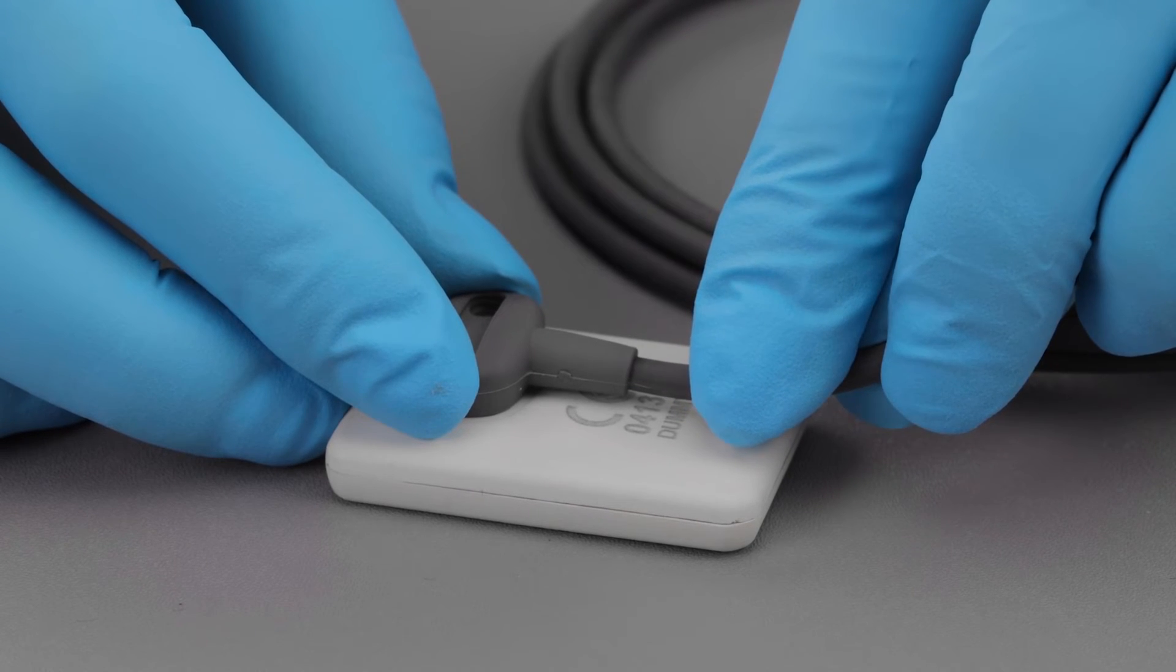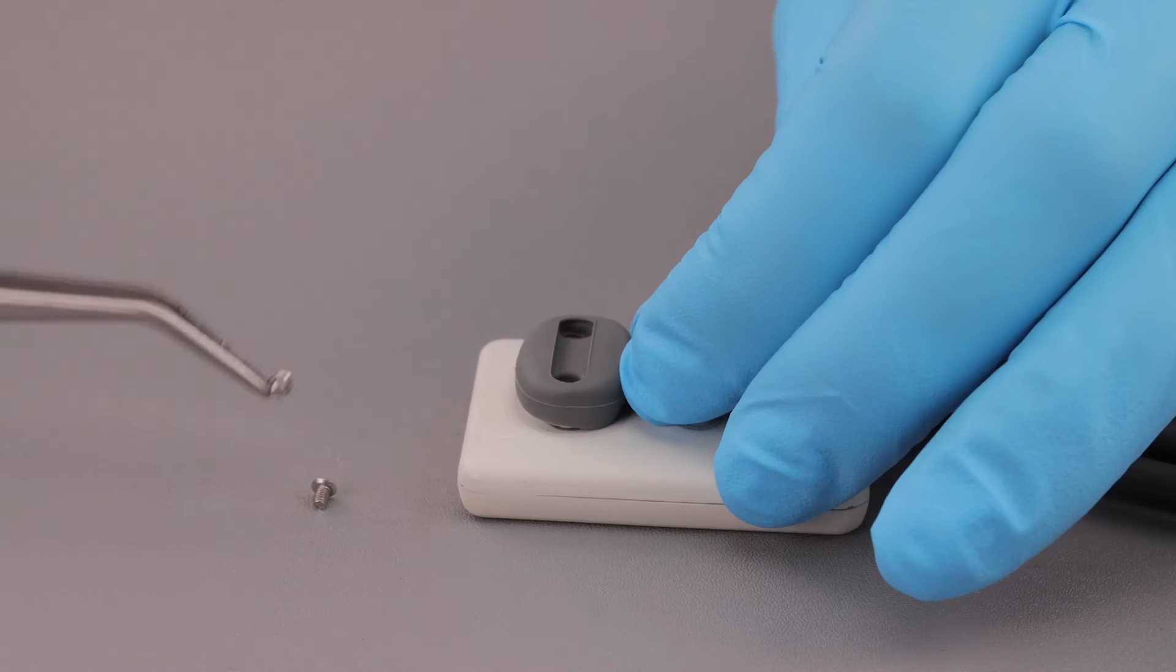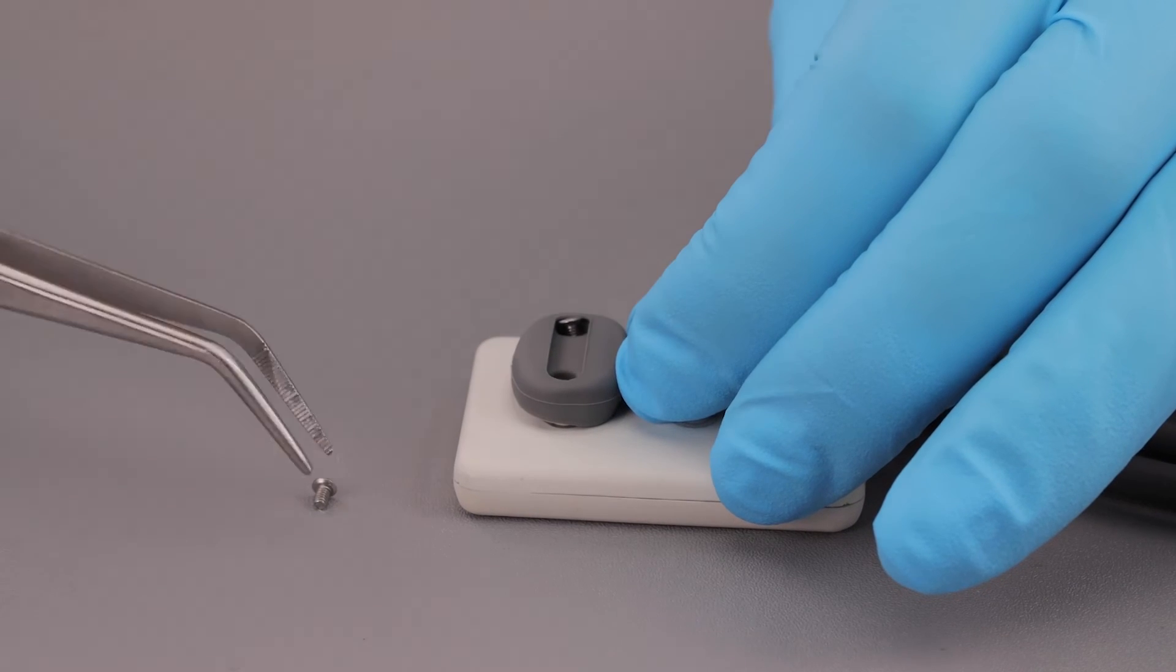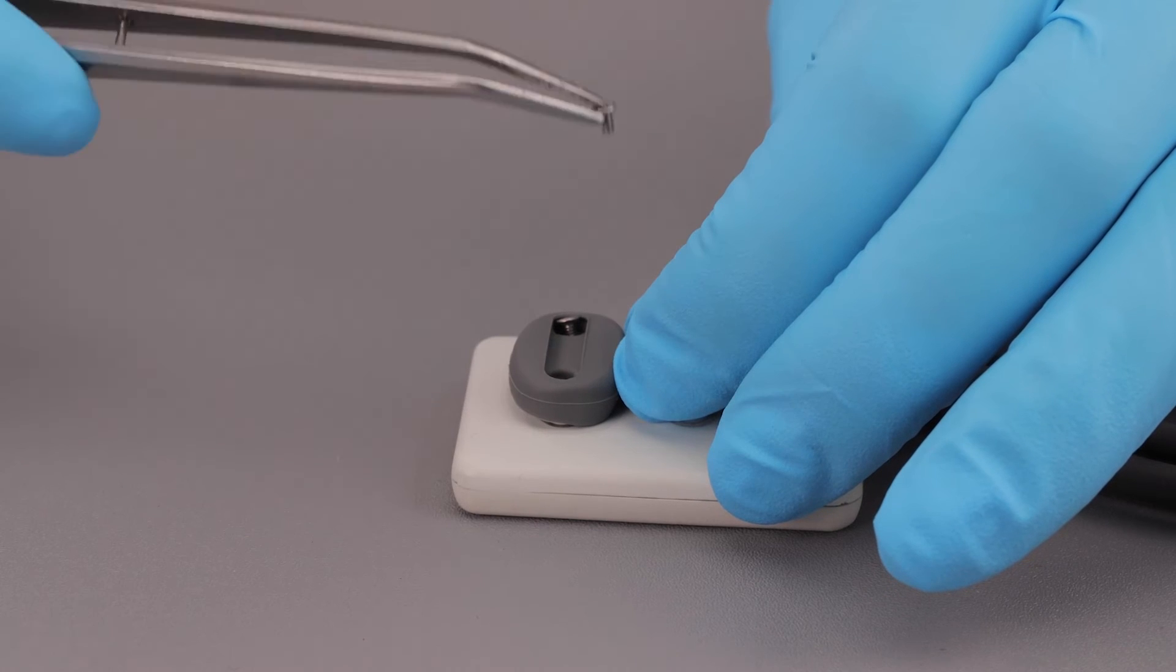When properly aligned, the cable will fit in the back of the sensor evenly and the metal area will be completely covered. Remove the two new screws from the kit.